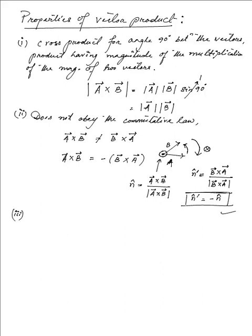The third property is that the cross product of a vector with itself will be zero, as opposed to the dot product where a vector dotted with itself gives its square. If we take vector A and compute A cross A, using the general formula we have |A| × |A| × sin(0°), because A makes an angle of 0 with itself. Since sin(0) = 0, we end up with a null vector. This is another important property.